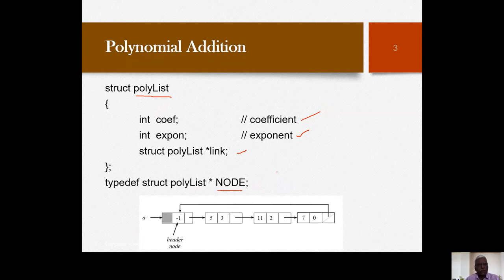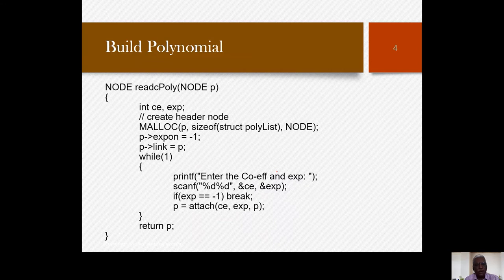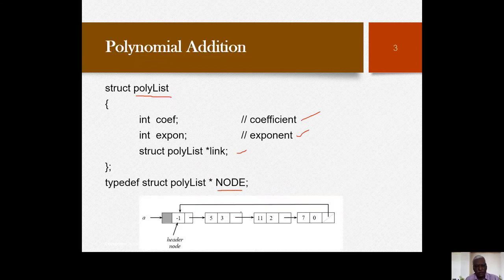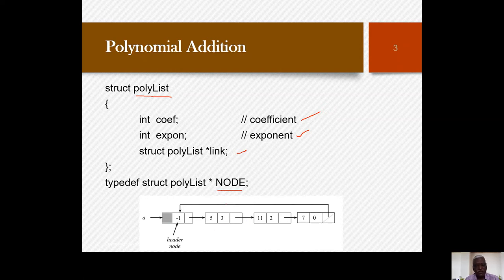Each node consists of two info fields and one link field. Now we move on to how to actually build a polynomial — how to read the terms to completely build it. The header node's exponent field is minus one and the coefficient field is immaterial. The reason for this is that the header node should have a totally different data value compared to normal terms; we are not expecting a negative exponent for normal terms.